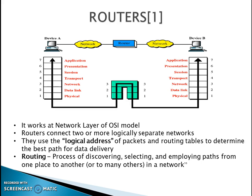The third device is a router, which is functional at the network layer of the OSI model. The network layer's main function is to provide end-to-end delivery, and the router is an intelligent device that helps accomplish this task. Routers connect two or more logically separate networks. They use the logical address of packets and have routing tables to determine the best path for data delivery. Routing is a process of discovering, selecting, and employing paths from one place to another in a network.